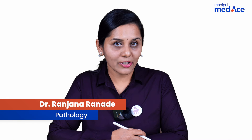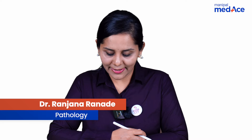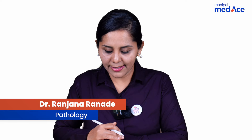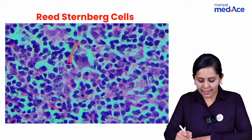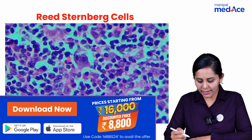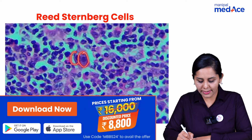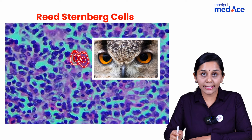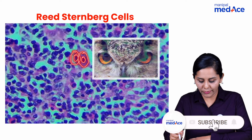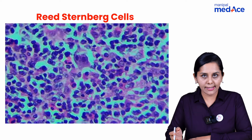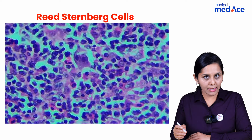My dear students, I wish you read this repeatedly. Reed-Sternberg cells — the moment you see these large cells, which are about 40 to 45 microns in diameter, with a large nucleus and prominent owl-like nucleolus, which are eosinophilic, amidst a lot of lymphocytes, eosinophils, and other inflammatory cells,